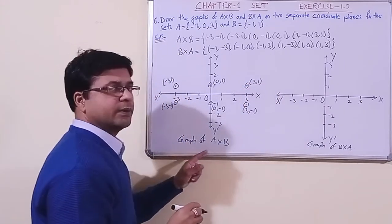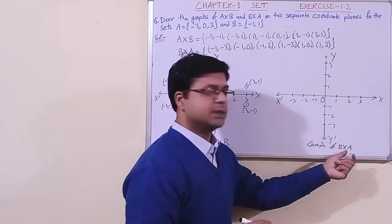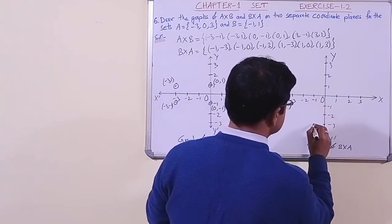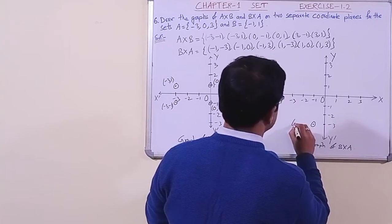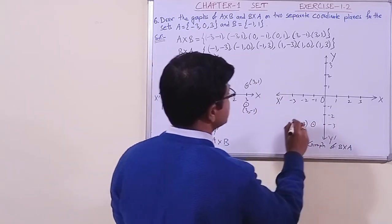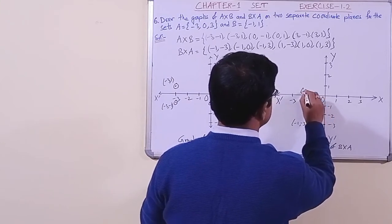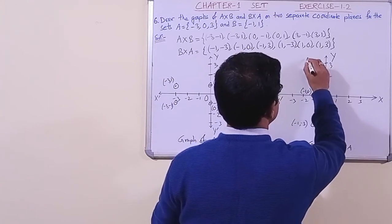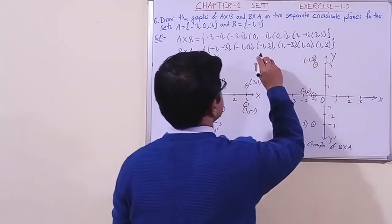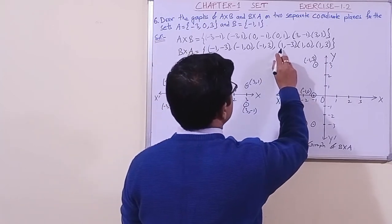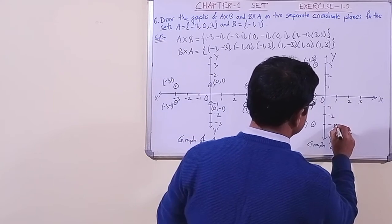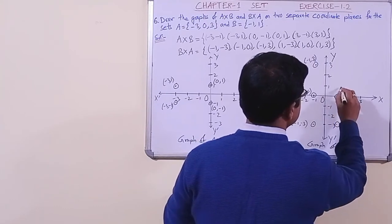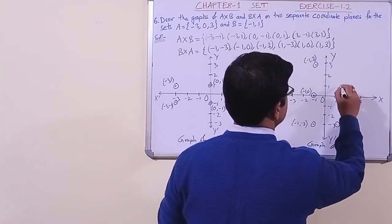Now for B cross A: the first point is minus 1 minus 3, then minus 1 zero, then minus 1 three, then 1 minus 3, 1 minus 1, 1 zero, and 1 three. We plot all these points on the second coordinate plane.